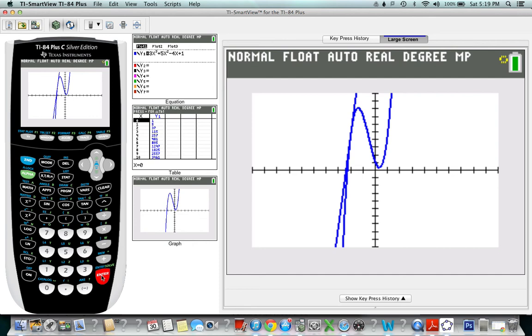Not only does it draw the tangent for you, it also gives you the equation of the tangent. So y equals 12x plus 29 is the equation of the tangent when x is negative 2. Pretty cool, right?